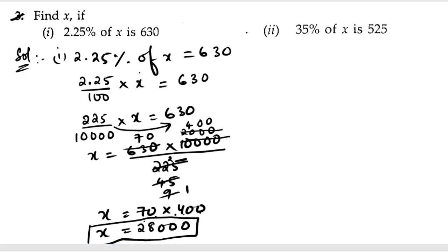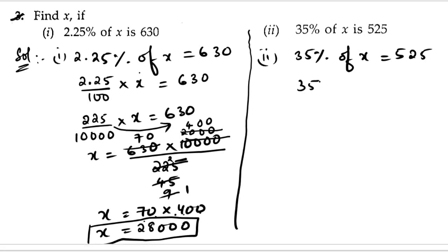Next, let us go for the second bit. In the second bit, they have given 35% of x is 525. So 35% per 100, times x equals 525. Now let us send this number there, we will get the reciprocal. So 525 times 100 by 35.